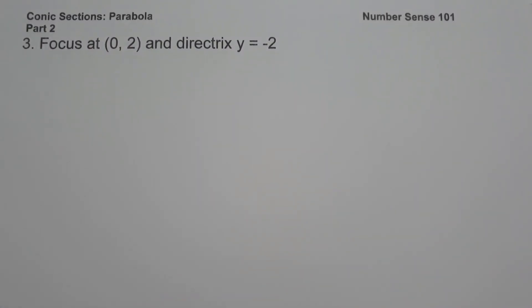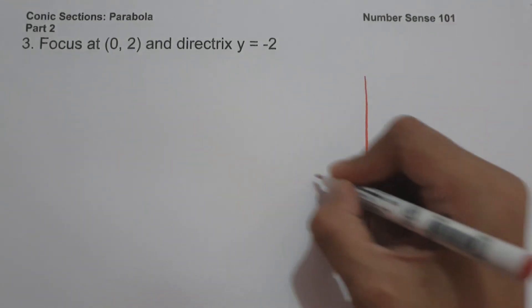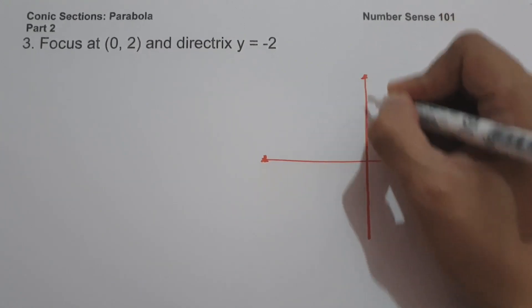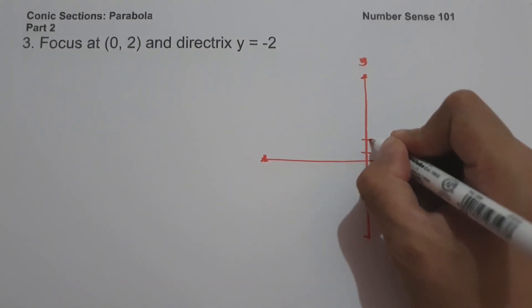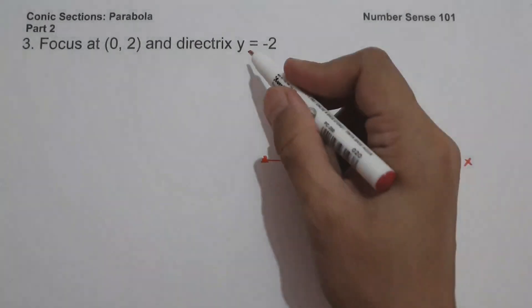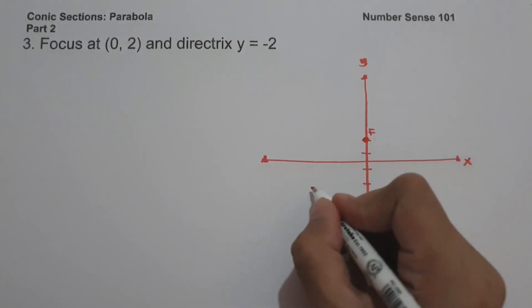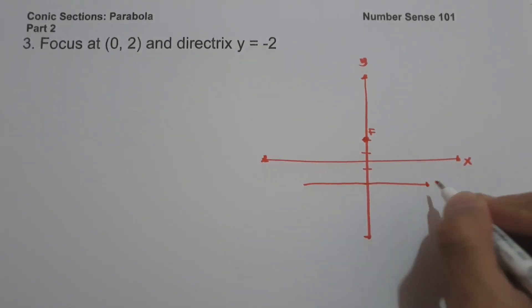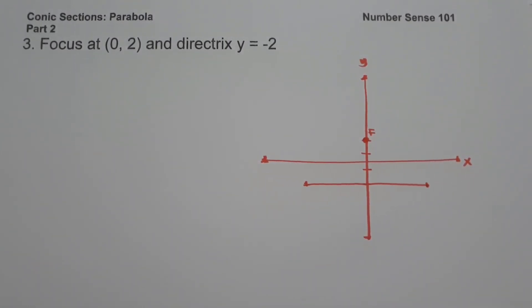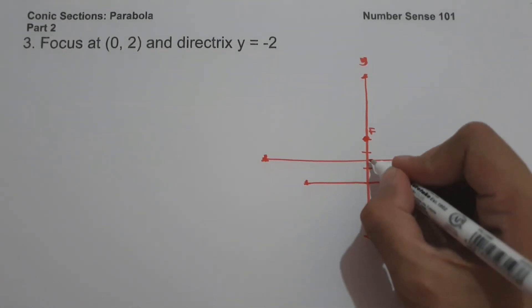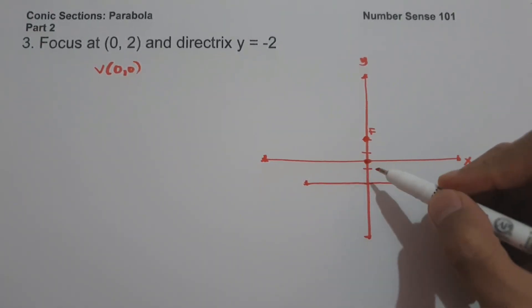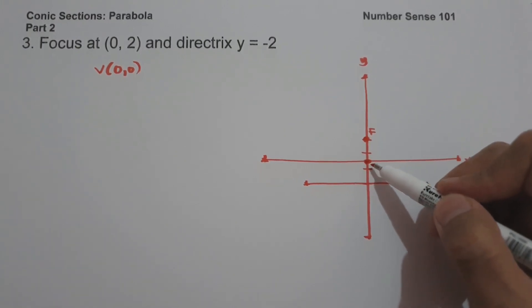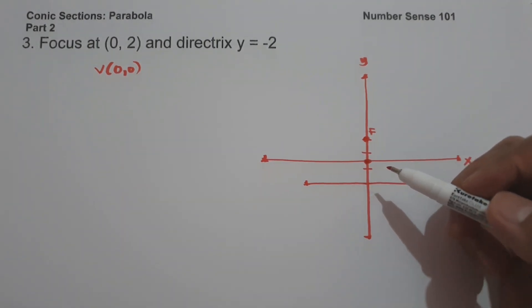In example number 3, we have the focus at (0, 2) and the directrix is y = −2. Let us draw a Cartesian coordinate plane. The focus is at (0, 2) and the directrix is the line y = −2. Since the vertex is the midpoint between the focus and the directrix, our vertex is located at the origin. Since the focus is above the vertex, the opening of our parabola opens upward. If our parabola opens upward, we use the formula (x − h)² = 4a(y − k).